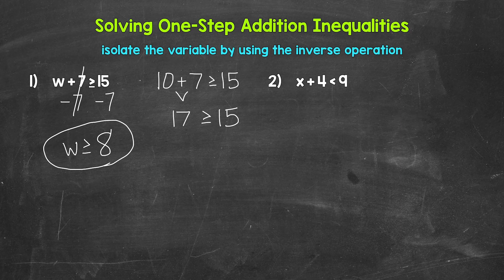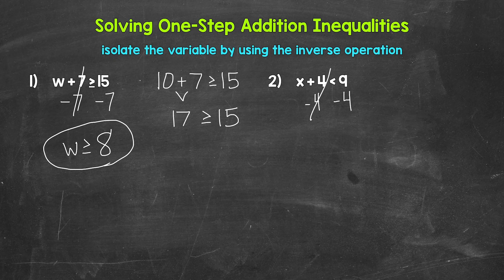Let's move on to number two, where we have x plus four is less than nine. So we need to isolate that variable of x. We are adding four to x, so we need the inverse operation of addition — that's subtraction. So subtract four from the left side. Whatever we do to one side, we have to do to the other. So subtract four from the right side as well. These fours cancel each other out. X is now isolated. So we have x is less than, and then on the right side, nine minus four gives us five.